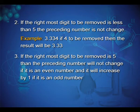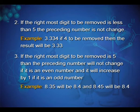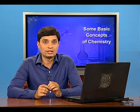Third: if the rightmost digit to be removed is 5, then the preceding number will not change if it is an even number and it will increase by 1 if it is an odd number. Example: 8.35 will be 8.4 and 8.45 will be 8.4.